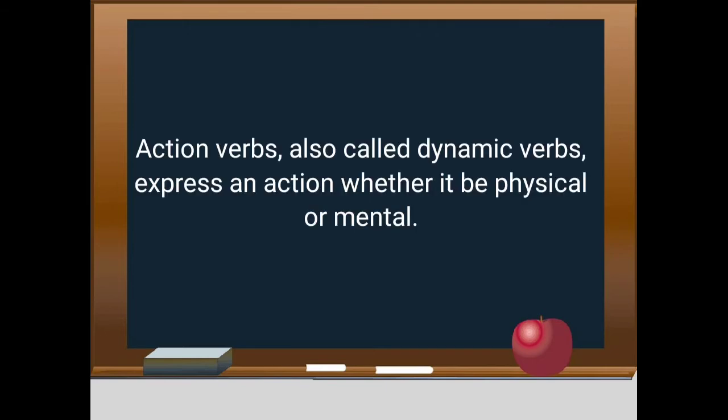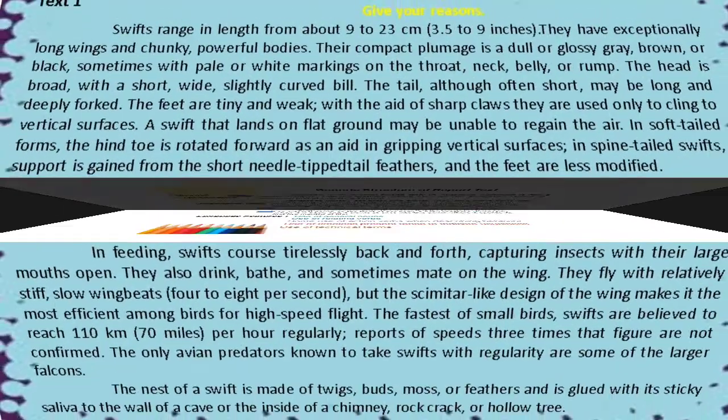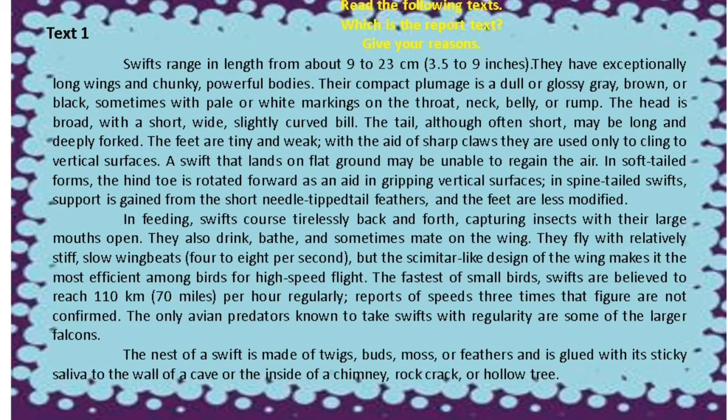Unsur kebahasaan berikutnya ialah penggunaan action verbs. Nah, di dalam teks kangaroo tadi there are three action verbs: the first is leave, then run, using simple present tense and using specific words.